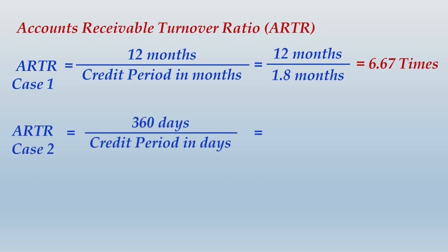In case 2, we will take 360 days divided by credit period in days — 360 divided by 45 days — that is 8 times. One thing to understand here: if you take 365 days, that will also be fine.